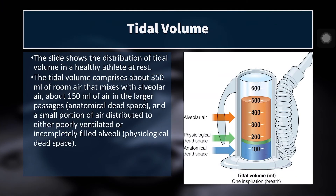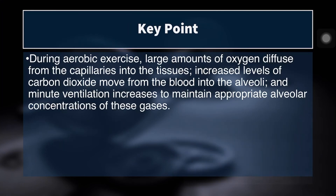This slide shows how we break down tidal volume in our lungs. The total air inside our lungs is distributed between 350 milliliters of room air that mixes with alveolar air, about 150 milliliters of air in the larger passages called anatomical dead space — where no oxygen and carbon dioxide exchange can occur — and a small portion distributed to poorly ventilated or incompletely filled alveoli, called physiological dead space, where exchange could happen physiologically but doesn't due to poor ventilation.